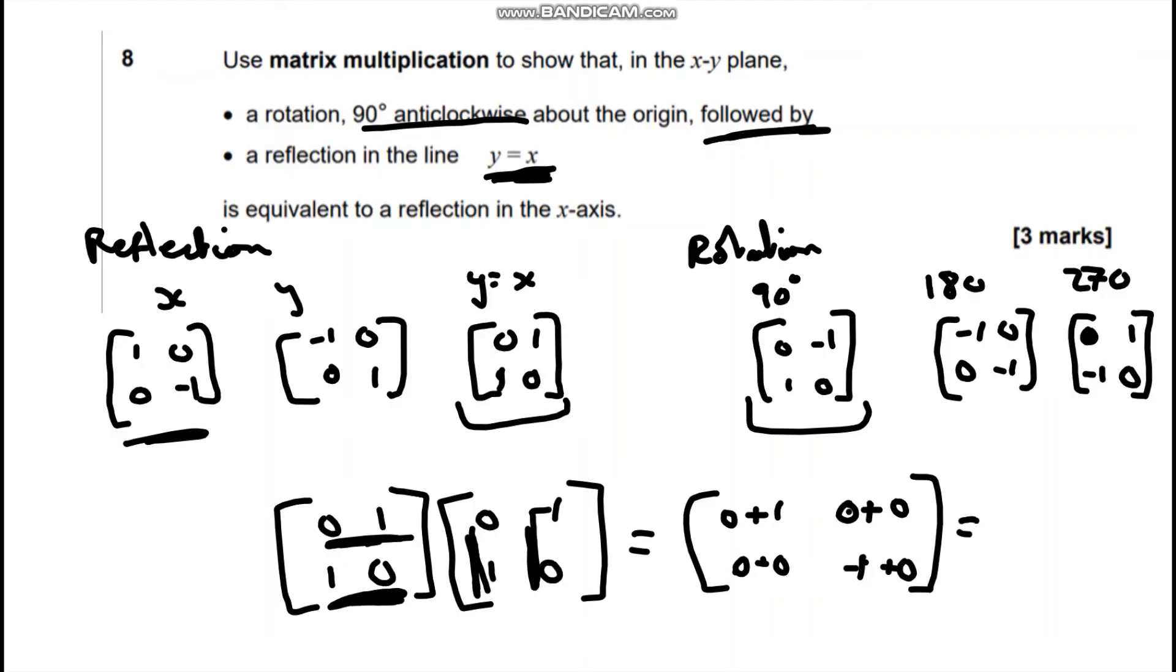So, if we tidy this up on the top, we're going to get 1, 0, 0, negative 1. And let's just check, is this what it is for the reflection in the x-axis? Here it is.